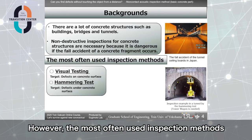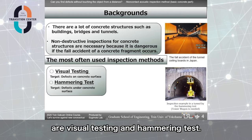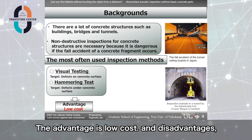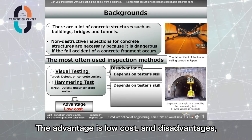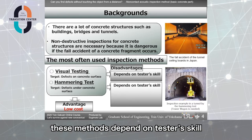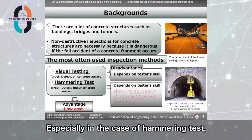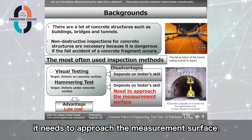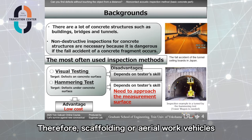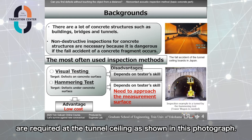However, the most often used inspection methods are visual testing and hammering tests. The advantage is low cost. And disadvantages, this method depends on testers' skill. Especially in the case of hammering tests, it needs to approach the measurement surface. Therefore, scaffolding or aerial work vehicles are required at the tunnel ceiling, as shown in this photograph.